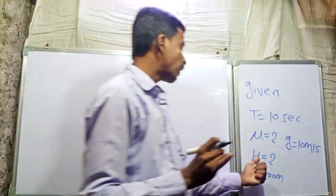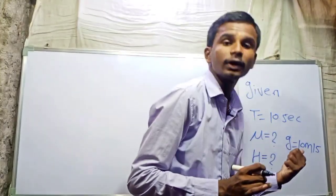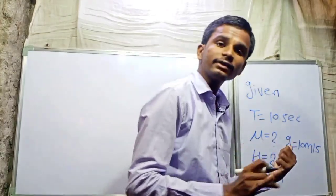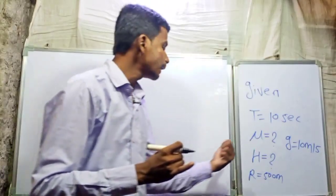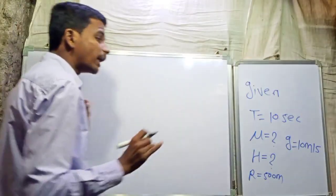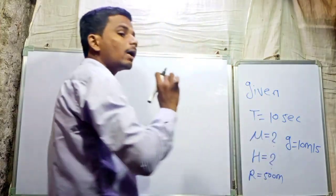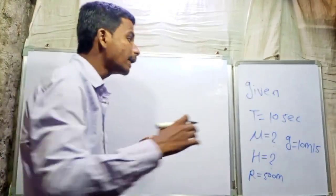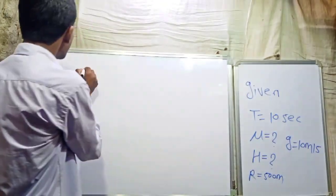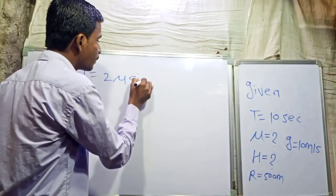To find the height, we first need to find u. To find height, we need u. So first we find u. Using the time period formula, we apply it to find u. The formula for time of flight is T = 2u sinθ / g.